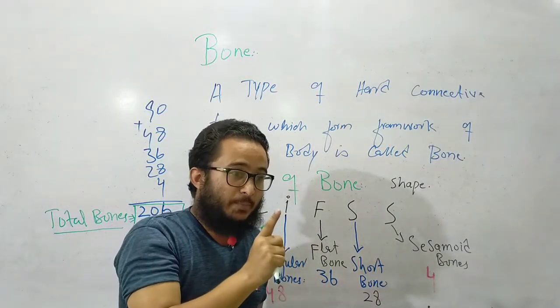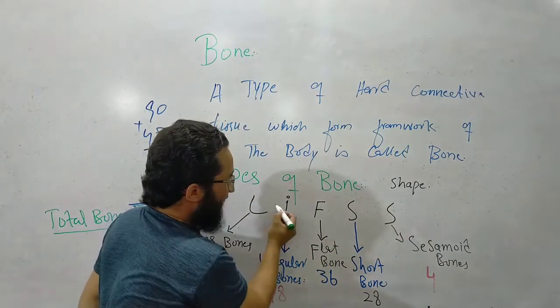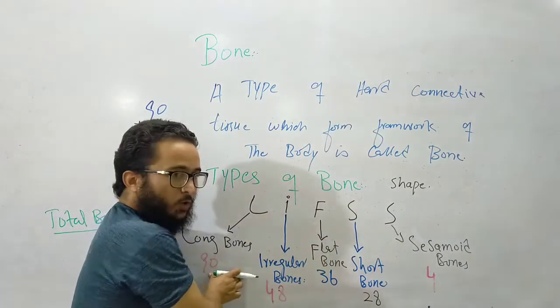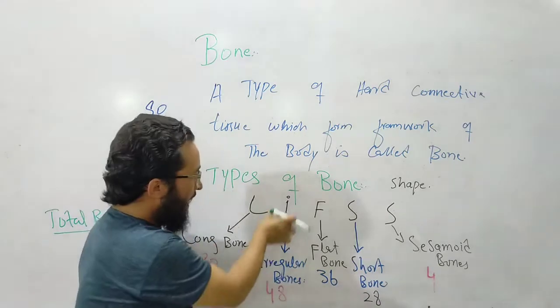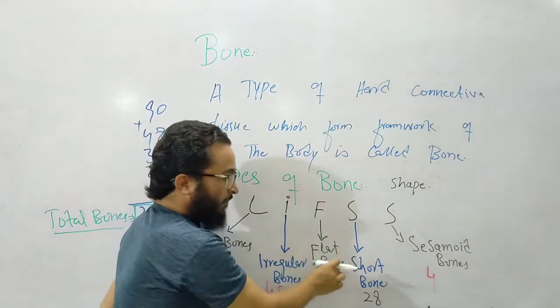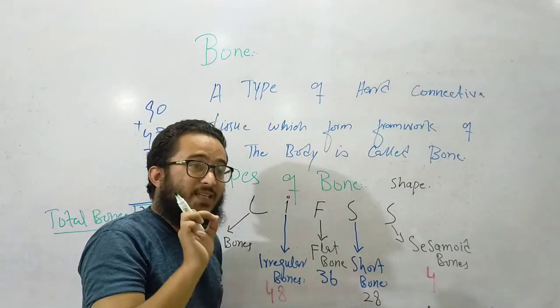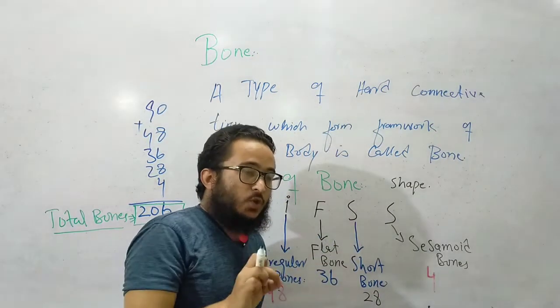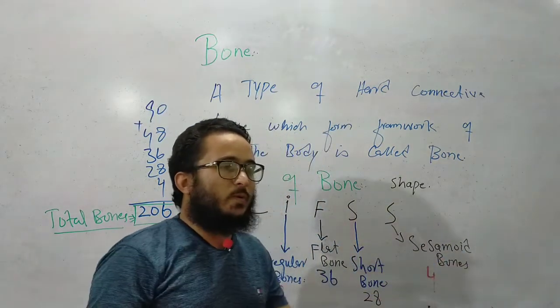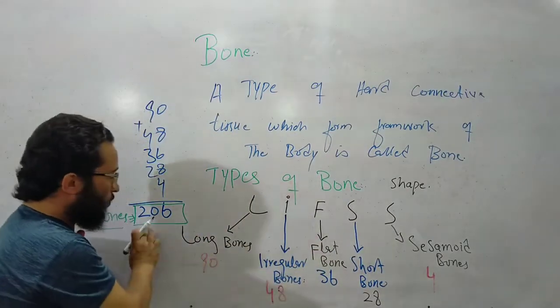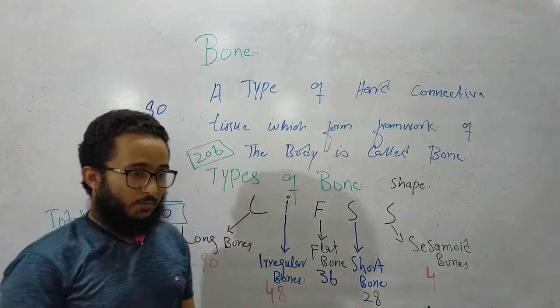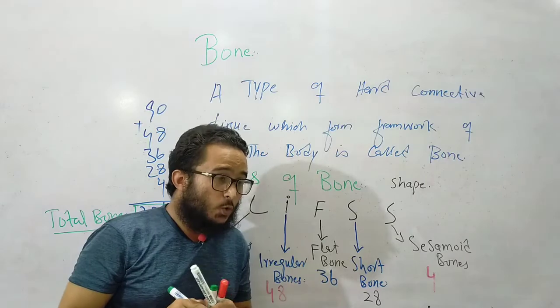So the types of bones, five types of bones based on shape, are L-I-F-S-S. L is long, I is irregular, F is flat, S is short, and S is sesamoid. Total bones: 206.